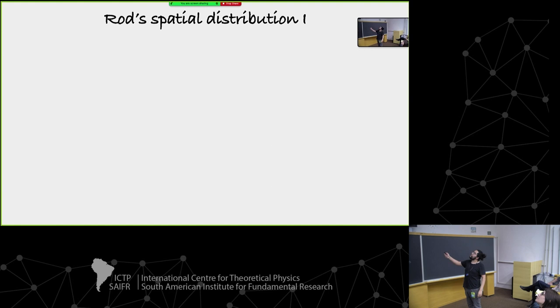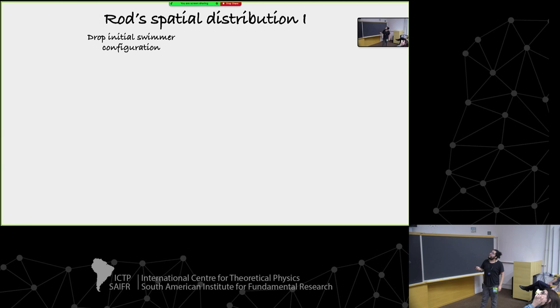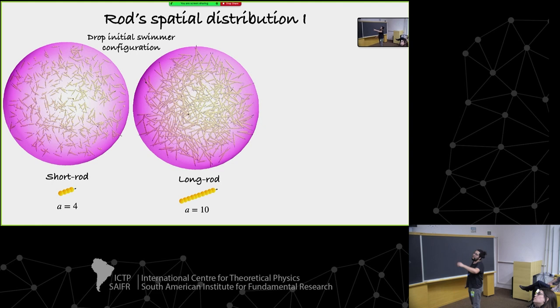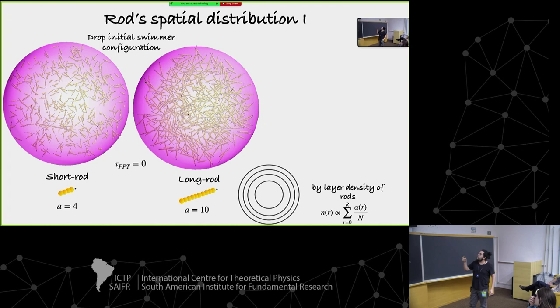As the rods leave the cargo they also move close to the surface, so they start to accumulate there. Let's see the initial configuration for two aspect ratios: on the left, short rods with aspect ratio 4, and on the right, long rods. We approximate the position of each rod to a layer inside the sphere and count the density over layers.